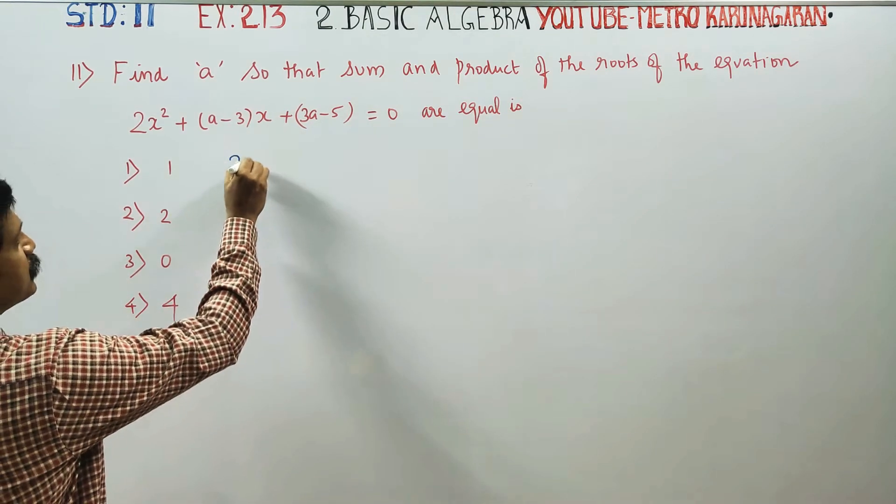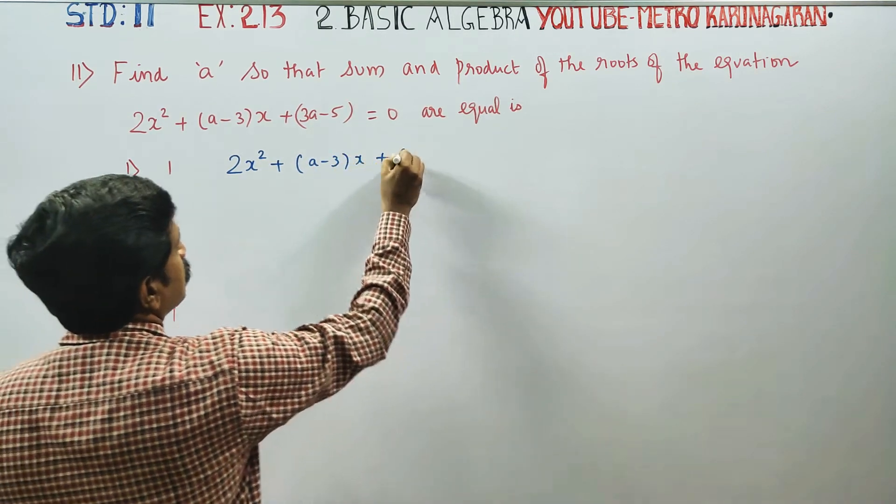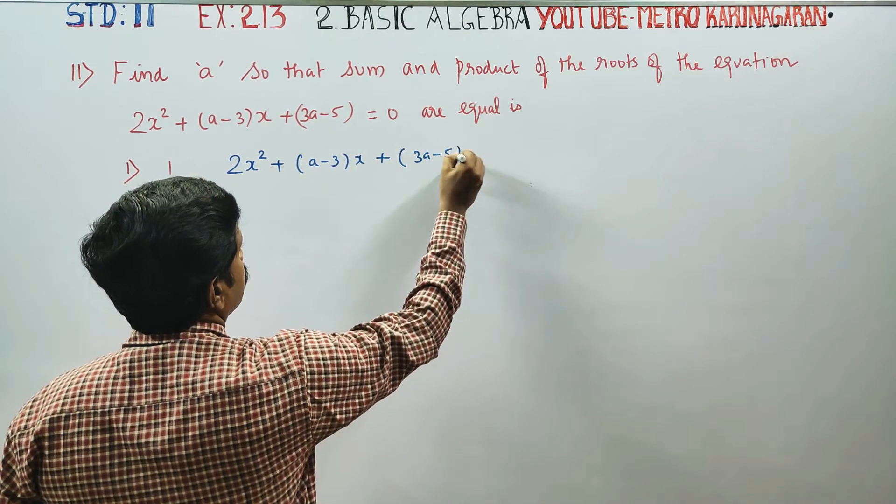The quadratic equation is 2x² + (A-3)x + (3A-5) = 0.